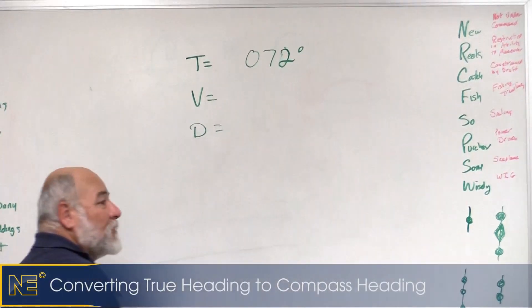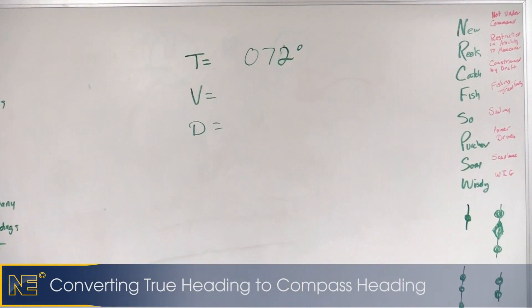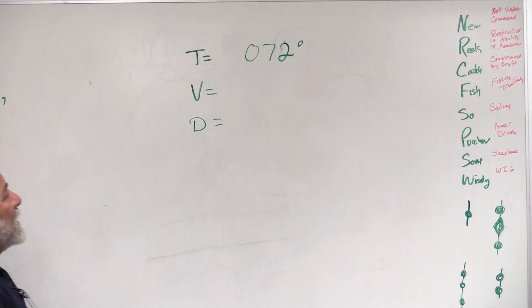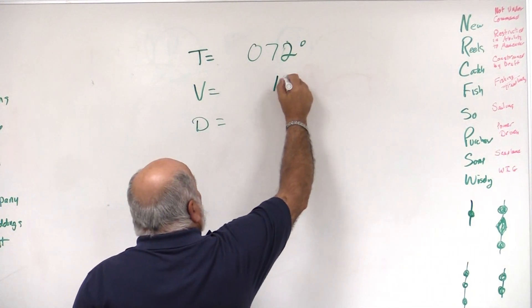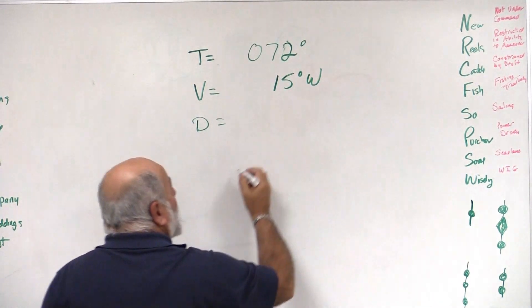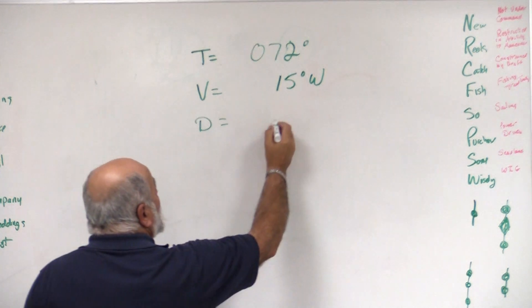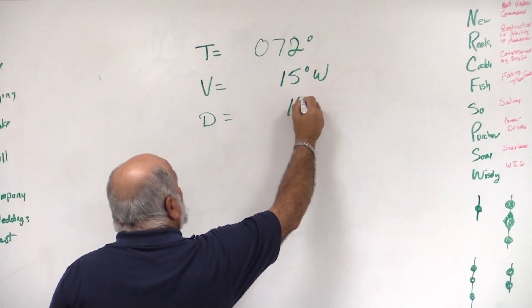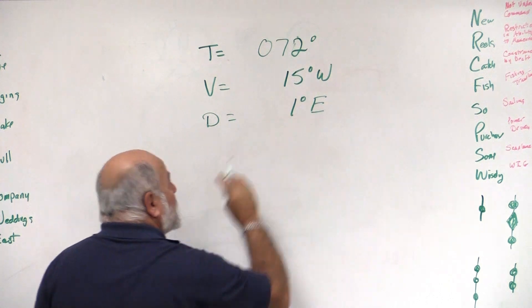072 degrees. The variation for the area that we're in is 15 degrees to the west, and we have a deviation card for our vessel. For 72 degrees, they tell us that we have a 1 degree easterly deviation.